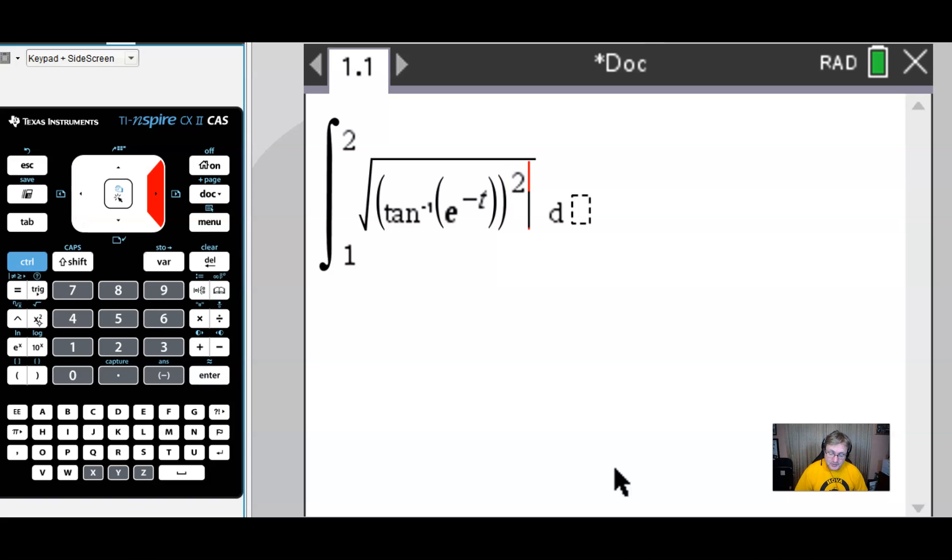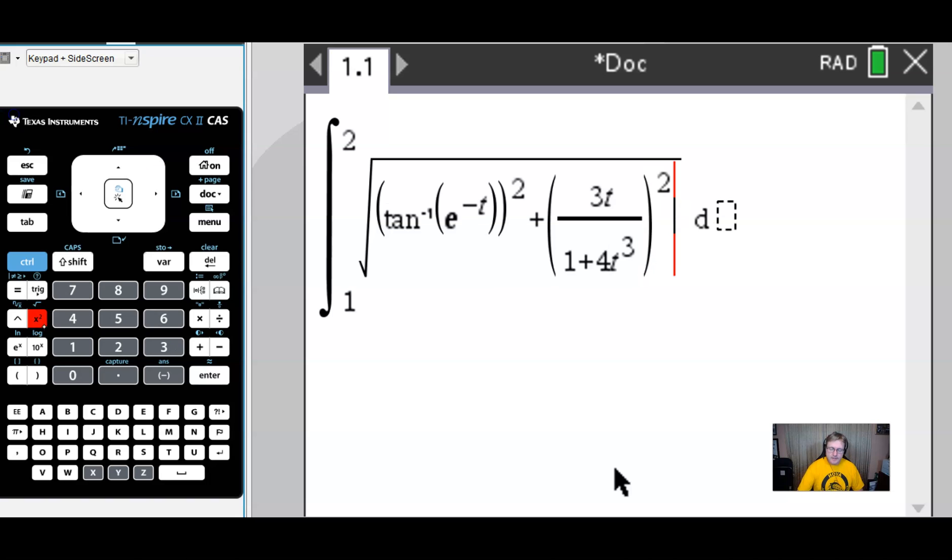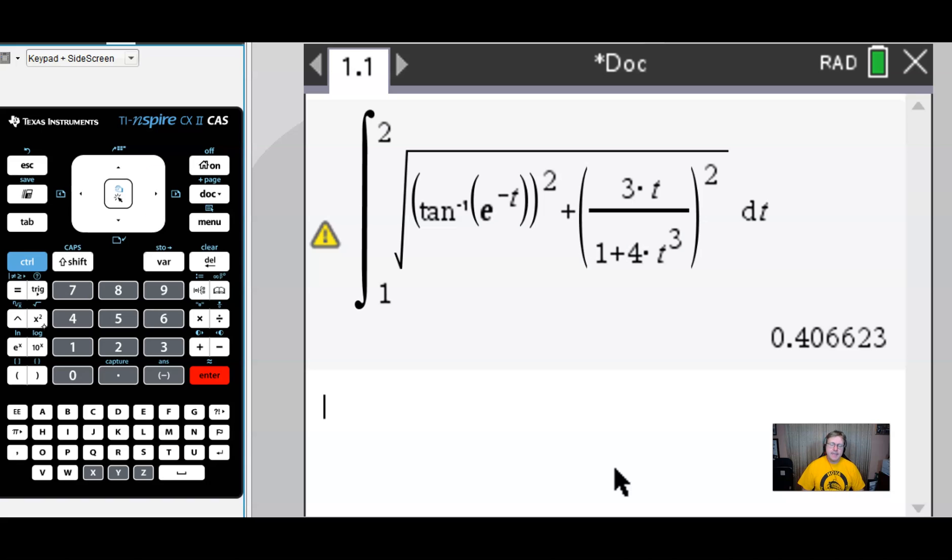Sometimes knowing how to use your calculator is a very vital part of the AP exam in scoring about four or five of those calculator active points. We're going to add to that another expression squared. So let's go ahead and put that parentheses in. Pull up a fraction template. However, you are going to do that on your particular calculator. The inspire says control divide. We'll do a good job with that. And then I enter 3 times t all over 1 plus 4t all raised to the third power. The t to the third power, that is. And then I'm going to square that particular fraction. The parentheses there make that easy. And then you need to put in your differential here with respect to t.